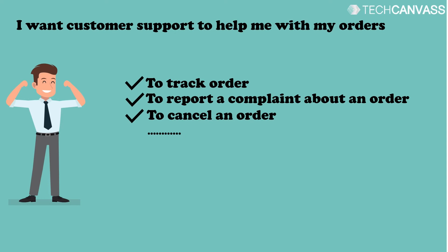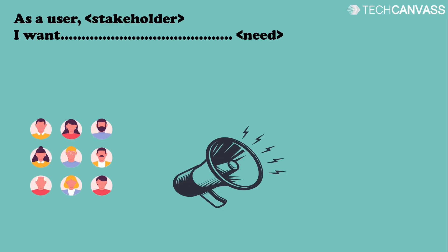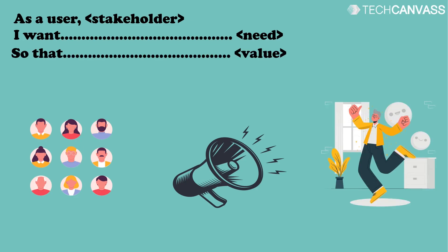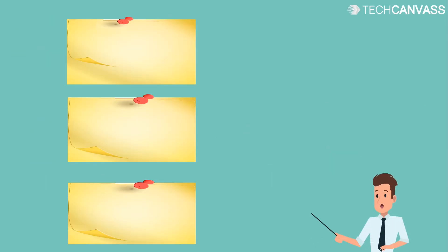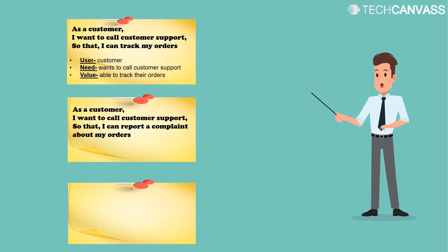There is a standard format followed worldwide, and John will be using the same format: 'As a [user/stakeholder], I want [what is needed], so that [what value will be delivered].' John will follow this format while writing the user stories. For example: 'As a customer, I want to call customer support, so that I can track my orders.' Here, 'customer' is the user, 'call customer support' is the need, and 'able to track orders' is the value.